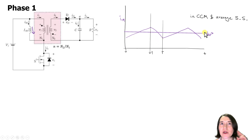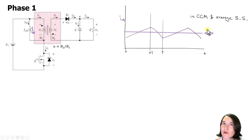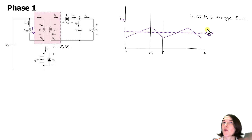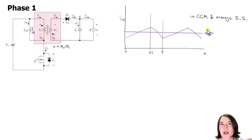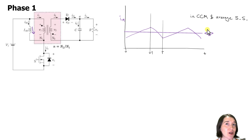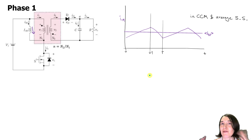There are two different ways we can find that average value, and we have to express it in terms of things we know — specifically either the input characteristics or the output characteristics. We'll put it in terms of the input current first, then the output current, giving us two different equations. Let's start in phase one when the switch is on.